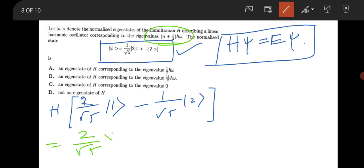So it will be 2/√5 first state, n equal to 1, it will be 3/2 ℏω minus 1/√5 for second state 2, it will be 5/2 ℏω. If you rearrange it, you can take 1/2 common.